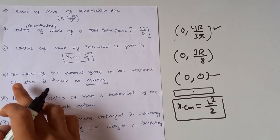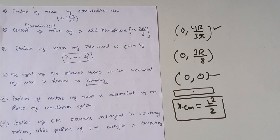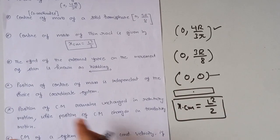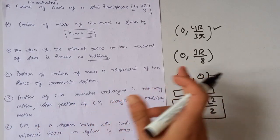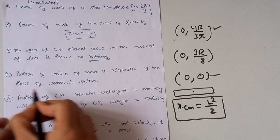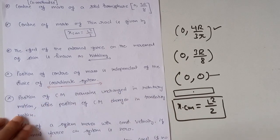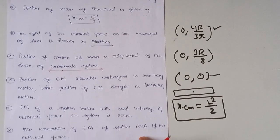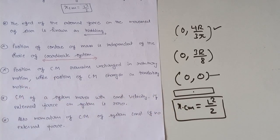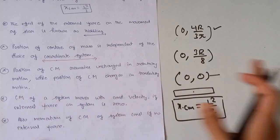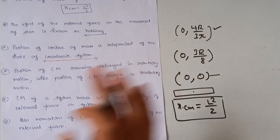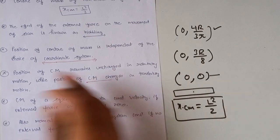The effect of an external force on the movement of a star is known as wobbling. The position of the center of mass is independent of the choice of the coordinate system. The position of the center of mass remains unchanged in rotatory motion, while the position of center of mass changes in translatory motion.